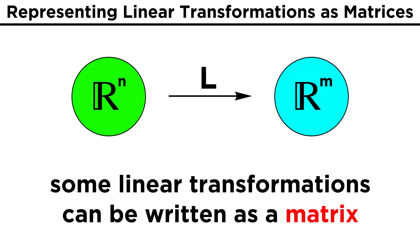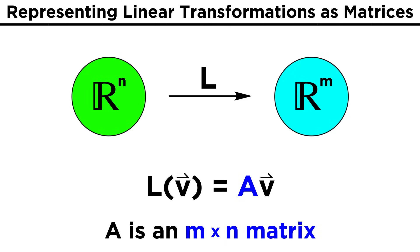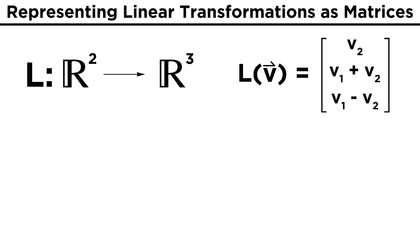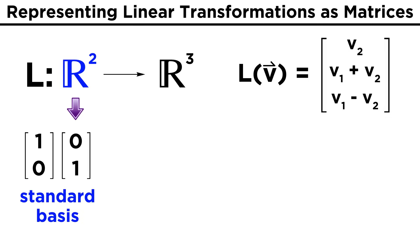A useful thing we can do with linear transformations that map R^N to R^M is represent them as a matrix. So a linear transformation L(V) can be written as an M-by-N matrix A multiplied by V. In order to get this matrix, all we must do is transform the standard basis of R^N, and that will make up the columns of our matrix A. Let's once again consider our linear transformation from R2 to R3: L(V) = (V2, V1+V2, V1−V2). Since we start with vectors from R2, we want to transform the standard R2 basis vectors, (1,0) and (0,1).